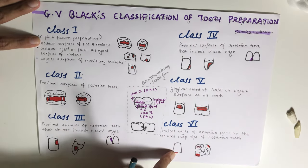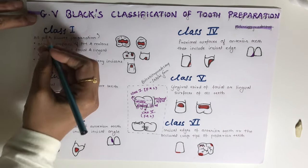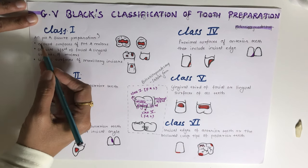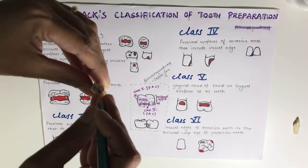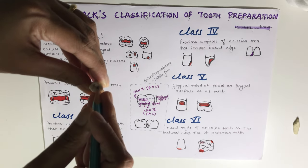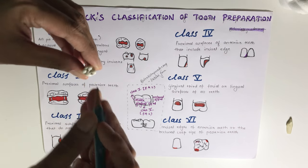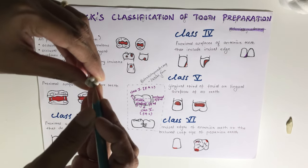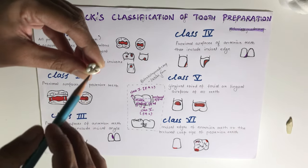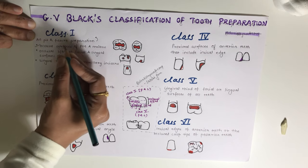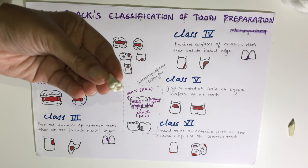Starting with Class 1 - this is known as all pit and fissure preparation. On this molar typhodont, these depressions are your pits and these lines are your fissures. Class 1 is the pit and fissure preparation because any preparation involving these pits or fissures falls under Class 1.